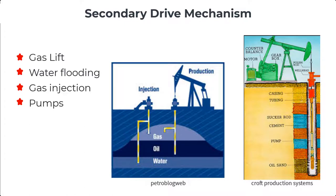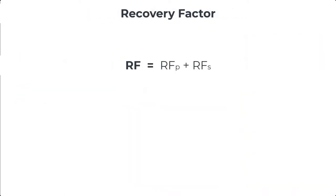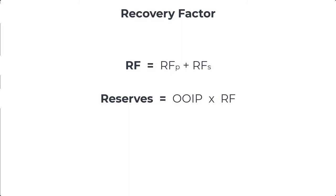To calculate your recovery factor, RF for short, you sum the recovery factor resulting from your primary drive mechanism with the recovery factor resulting from the secondary drive mechanism. This gives you the total RF. This is one method of estimating reserves, and there are a couple more methods that we are going to look at in lesson two.